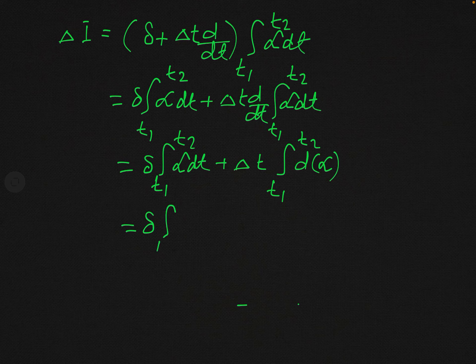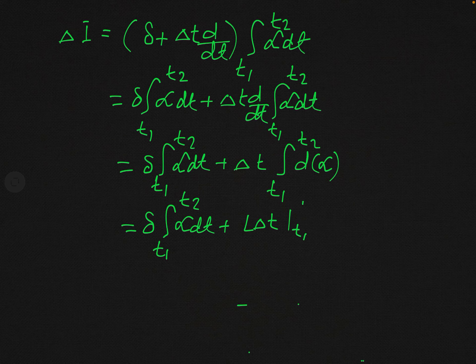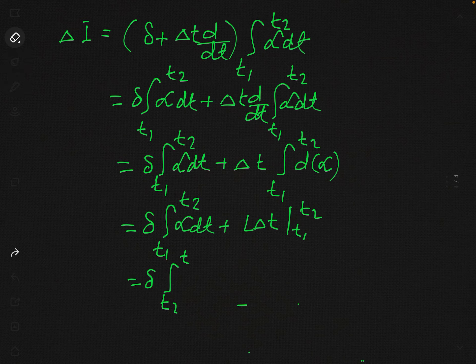This simplifies to: integral from t1 to t2 of delta L of (q_k, q_k dot, T) dt, plus L times delta T evaluated at limits t1 and t2. Now, L is a function of more than one variable. If f is the degree of freedom, then the number of q_k is f and the number of q_k dot is also f, so L is a function of 2f plus 1 independent variables.